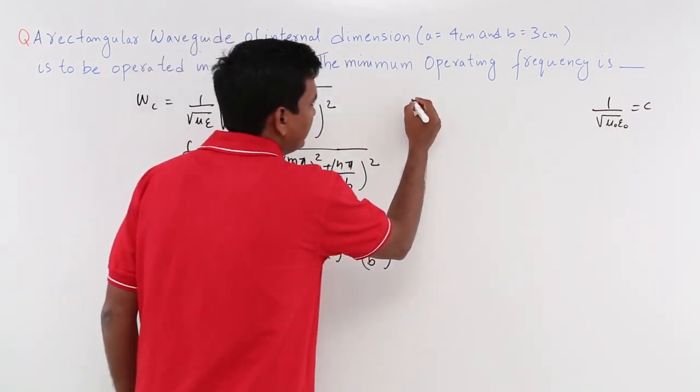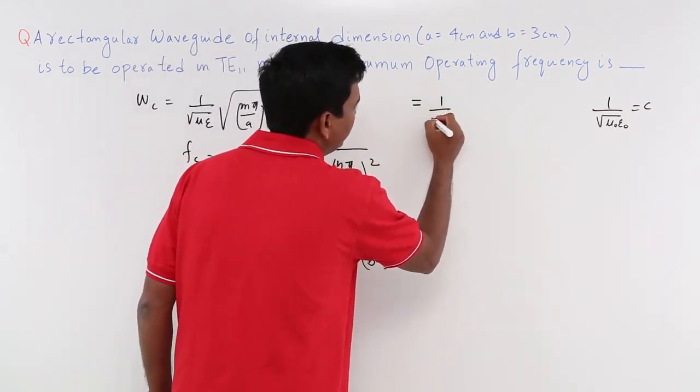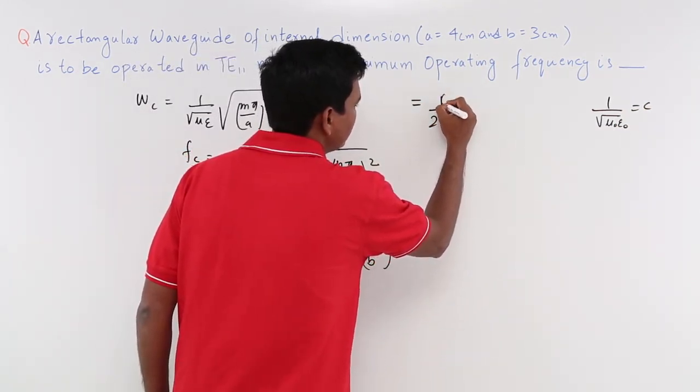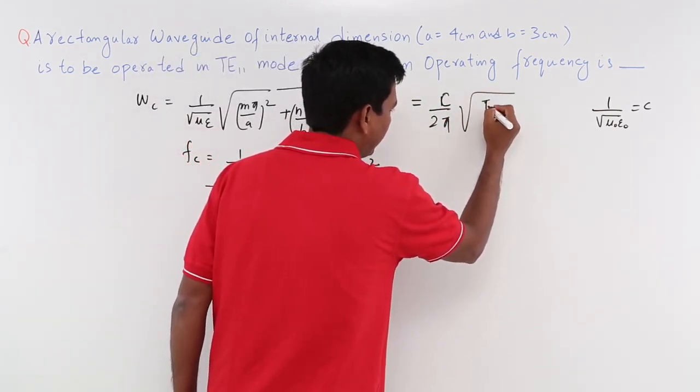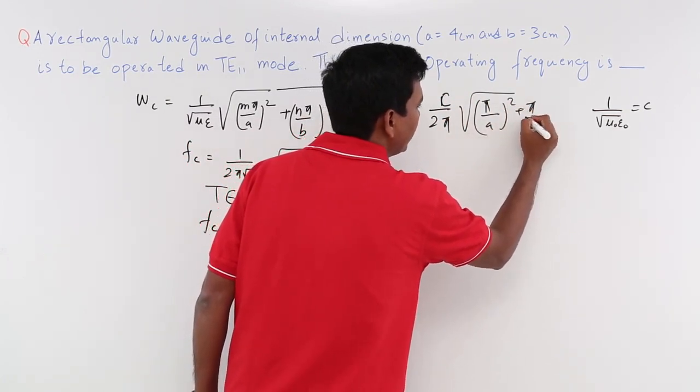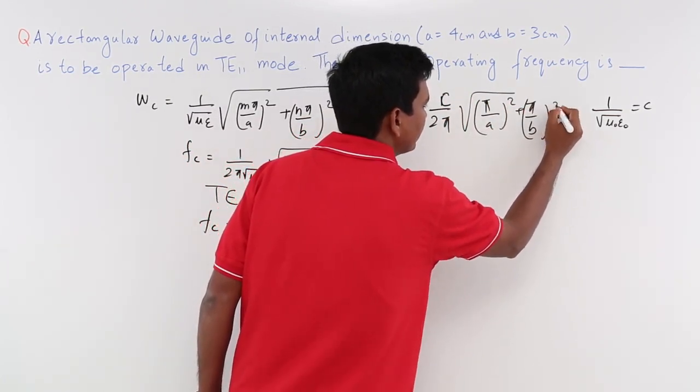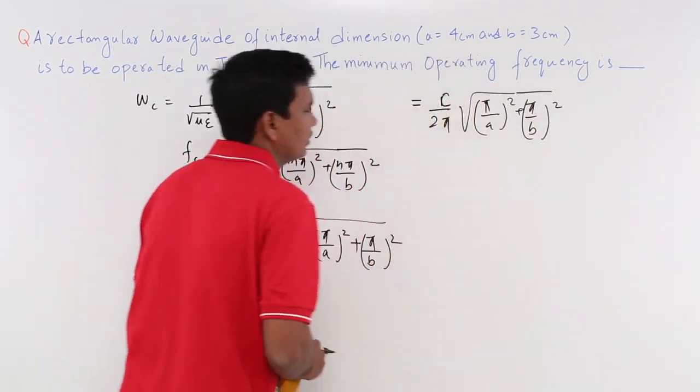So this will become, let me write it here. This would be 1 by 2 pi, this is your c, root over pi by A the whole square plus pi by B the whole square. So this is being noted.